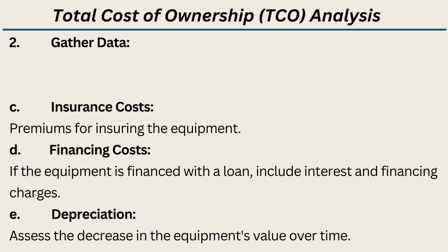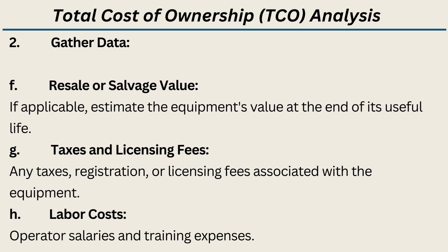C. Insurance costs — premiums for insuring the equipment. D. Financing costs — if the equipment is financed with a loan, include interest and financing charges. E. Depreciation — assess the decrease in the equipment's value over time. F. Resale or salvage value — if applicable, estimate the equipment's value at the end of its useful life. G. Taxes and licensing fees — any taxes, registration, or licensing fees associated with the equipment.